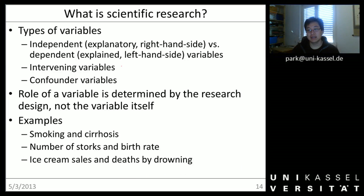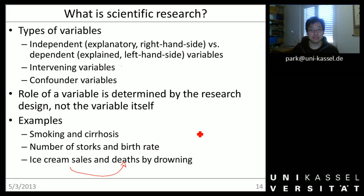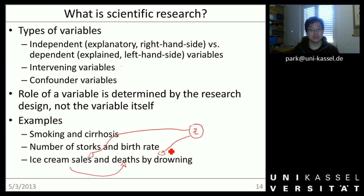Another example would be that we can observe a correlation between ice cream sales in a region and deaths that occur by drowning, which is, of course, also a spurious correlation. There is a third variable that influences both, and that is average temperature. If temperatures are high, there will be more ice cream sales, and if temperatures are high, we will also have more people in swimming pools, more people in lakes and rivers, and that will lead to more people drowning. So, again, we have a spurious relationship.